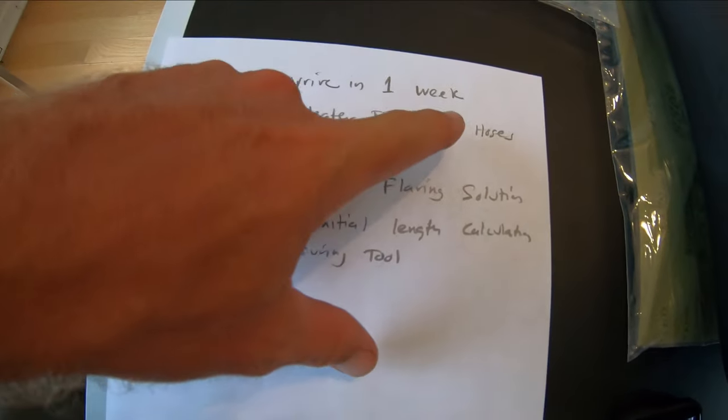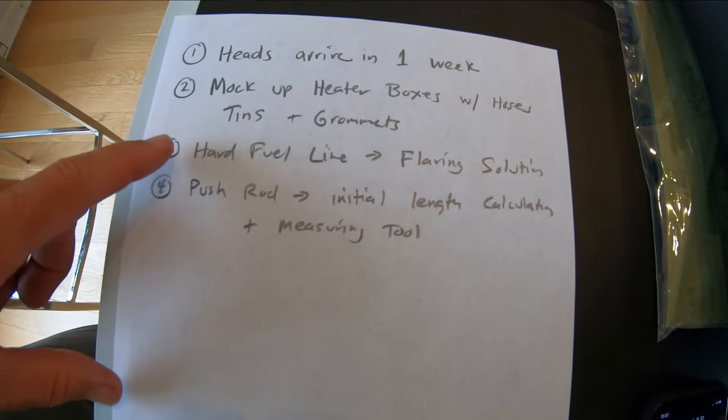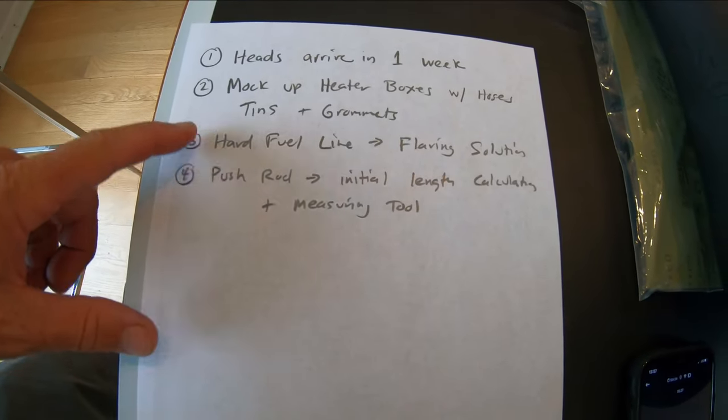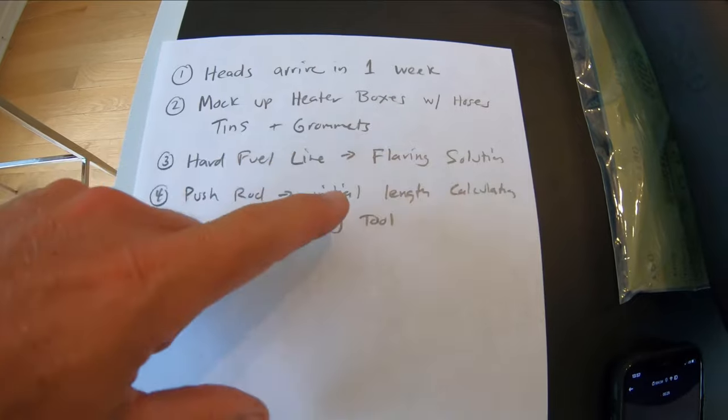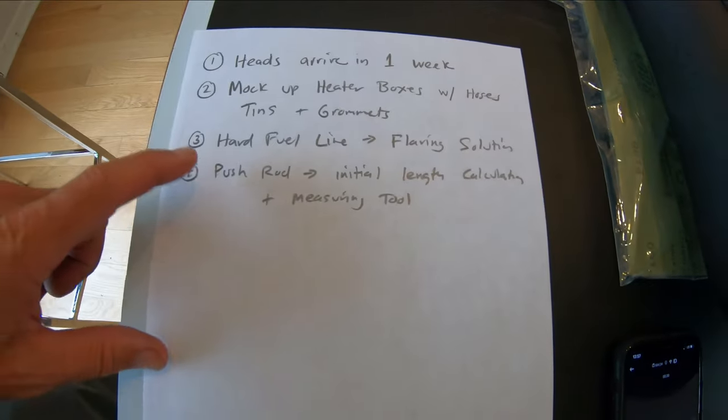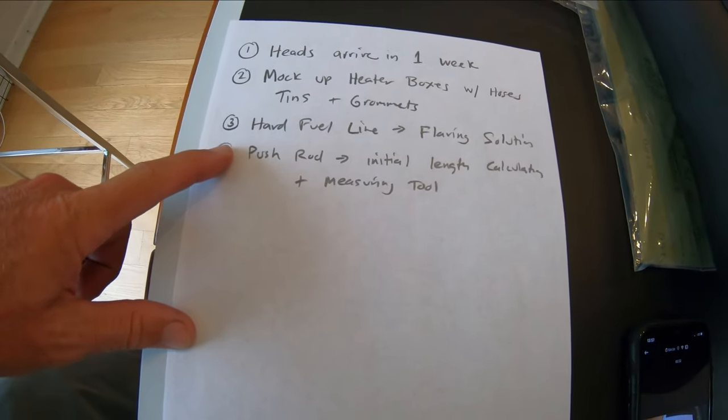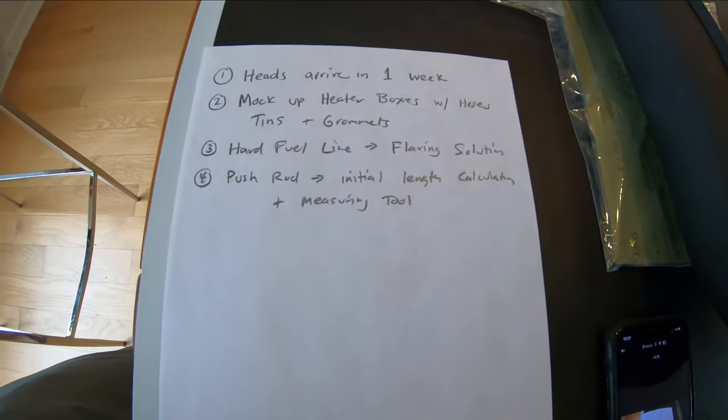So I mocked up the heater boxes with the hoses, the tins and the grommets, hard line fuel line. My flaring wasn't working very well so I got a solution to that, and the push rod measuring tool. I've done an initial length calculation for that.